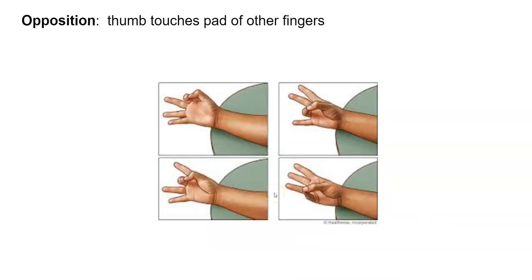And then lastly, we have opposition. Opposition is simply when your thumb touches the pads of the opposing fingers.